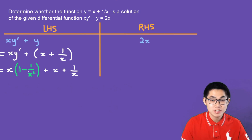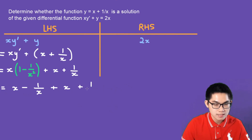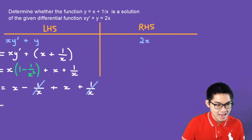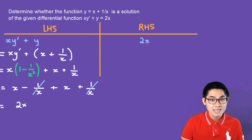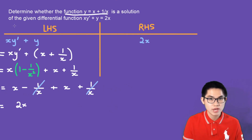Now we substitute y′ back into the left-hand side. This gives us x·(1 − 1/x²) + (x + 1/x), which equals x − 1/x + x + 1/x. The −1/x and +1/x cancel out, leaving 2x. Because the left-hand side equals the right-hand side, the answer is yes — this function is indeed a solution to the differential equation.